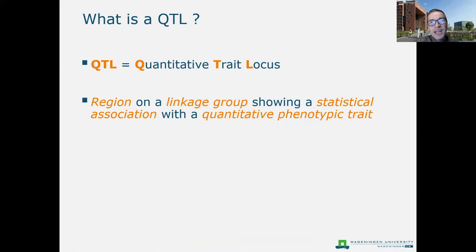So what is a QTL? A quantitative trait locus. The definition I use often is that it is a region on a linkage group that shows a statistical association with a quantitative phenotypic trait. The question came up whether we could use this approach also for qualitative phenotypic traits, and indeed we can, but it's not the other way around.